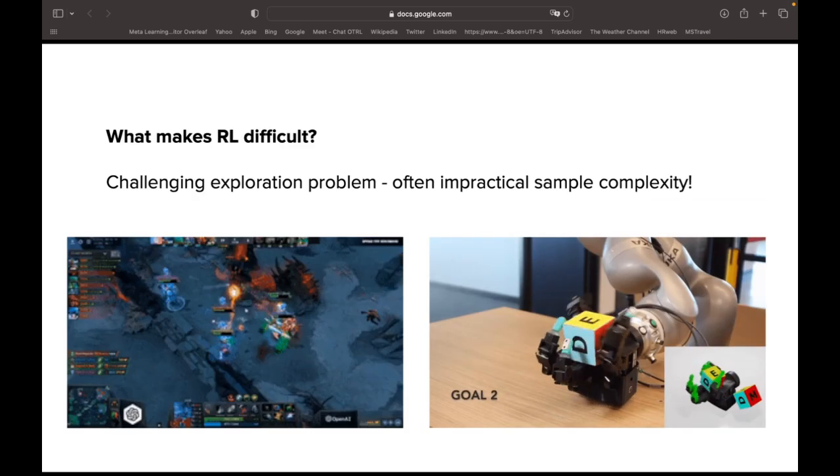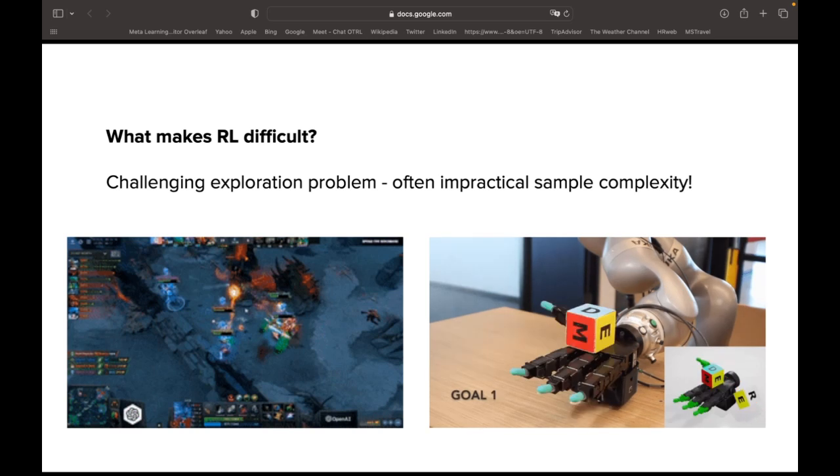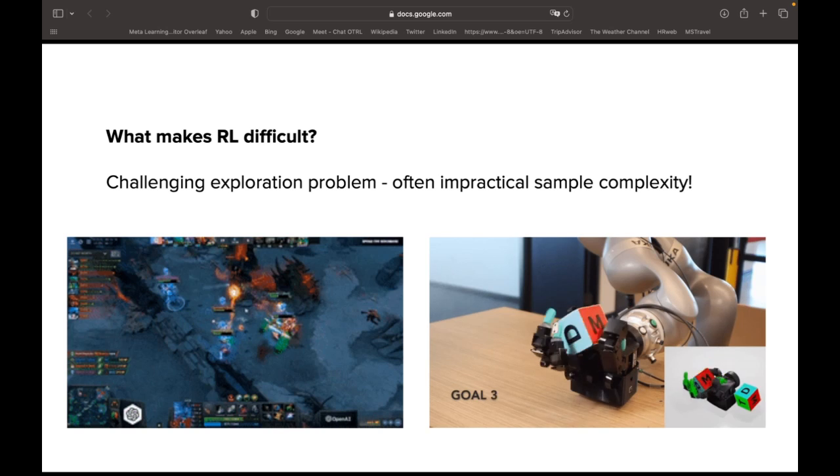The predominant challenge in reinforcement learning is in exploration. In high-dimensional state and action spaces, effectively exploring the environment to minimize reward can be challenging, especially with large state spaces and long horizons. This problem is particularly exacerbated in situations where the space must be explored effectively in order to even experience a reward. In a large state space, exploration seems exponentially hard, and yet, RL is able to solve extremely complex tasks, as those that are shown here. What makes it actually work?